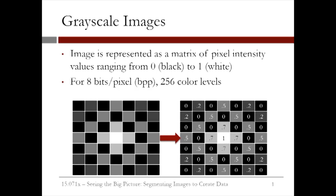In other words, the datasets contain a table of values between 0 and 1. The number of columns corresponds to the width of the image, whereas the number of rows corresponds to the height of the image. In this example, the resolution is 7 by 7 pixels.